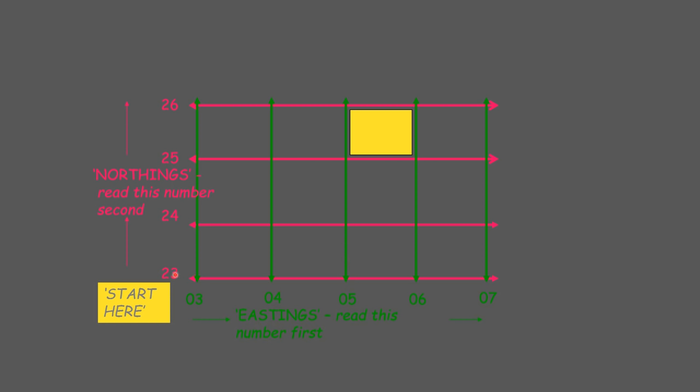And then we work our way up. 23, 24, 25 is the first northing line that comes into contact with this box. Therefore this yellow box would be grid reference 05, 25.